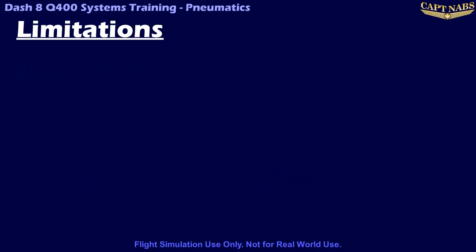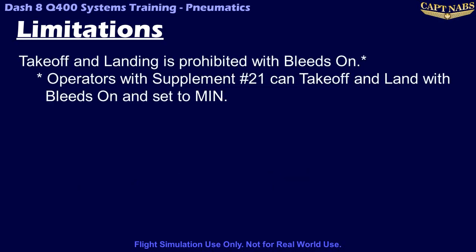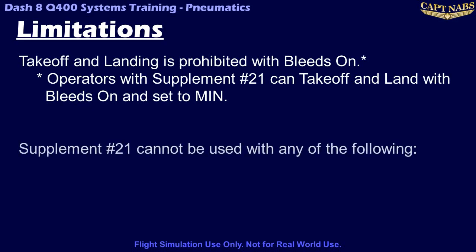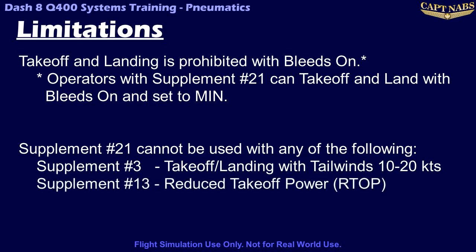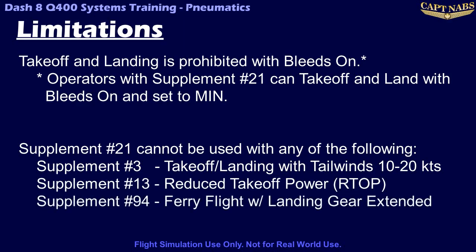So back to supplement number 21 — bleeds on takeoff and landing. Supplement number 21 cannot be used if any of these other supplements are being used at the same time: supplement number 3, takeoff and landing with tailwinds between 10 and 20 knots; supplement number 13, takeoff with reduced takeoff power or RTOP; supplement number 94, ferry flight with landing gear extended. If any of these conditions are in use, the bleeds must be off for takeoff and landing. All of these supplements were made incompatible because drawing bleed air from the engine reduces power output, and the extra power lost to the bleed system could impact performance.